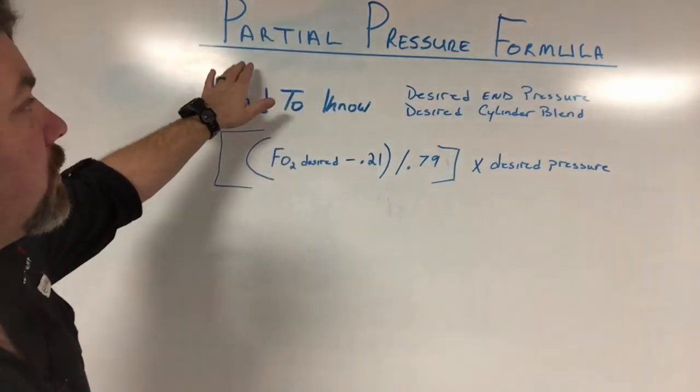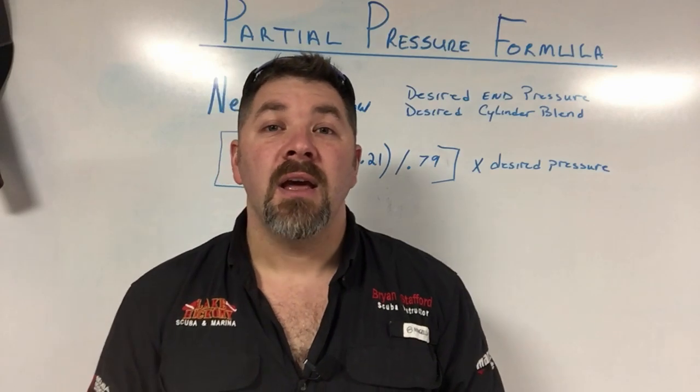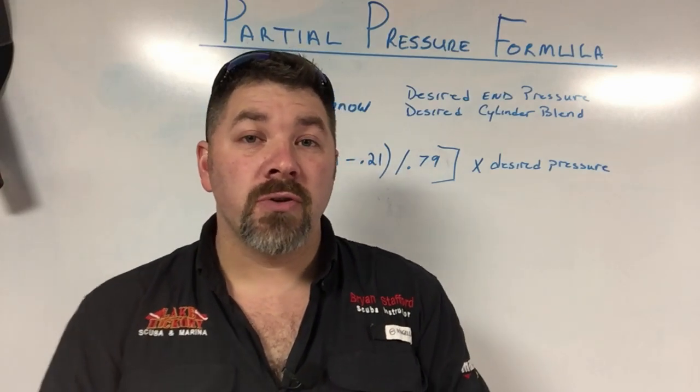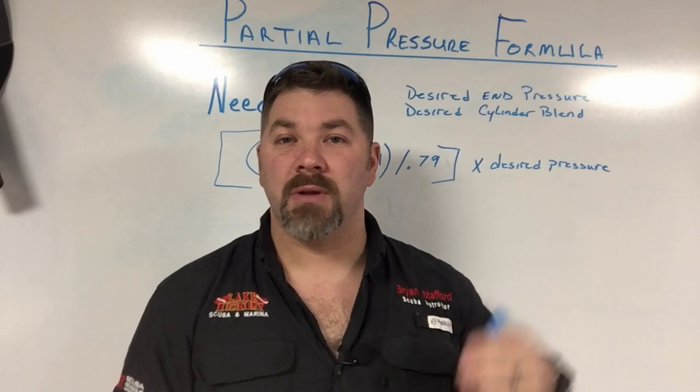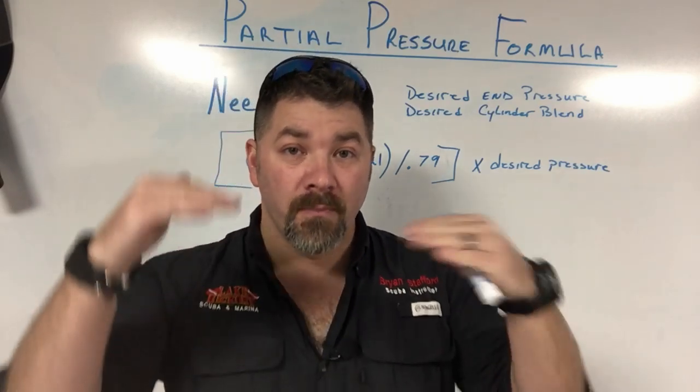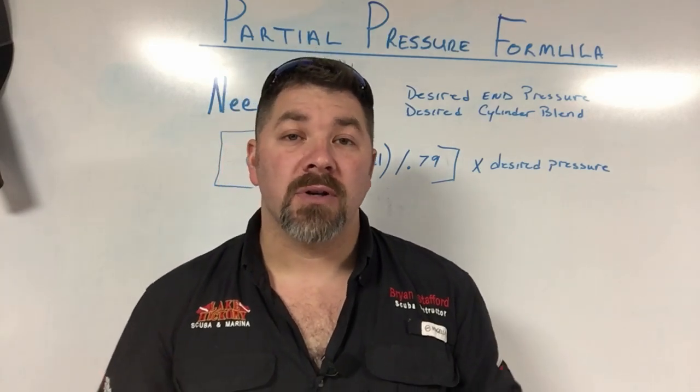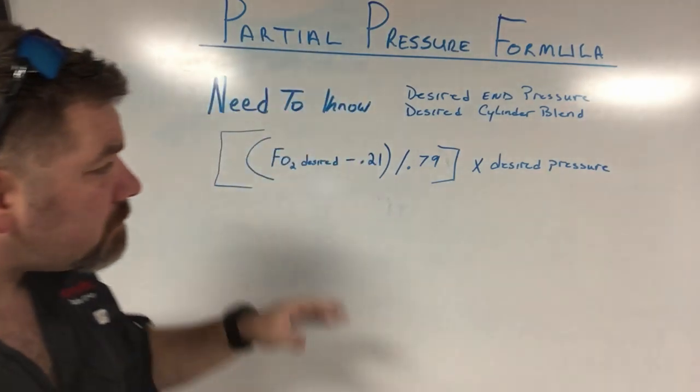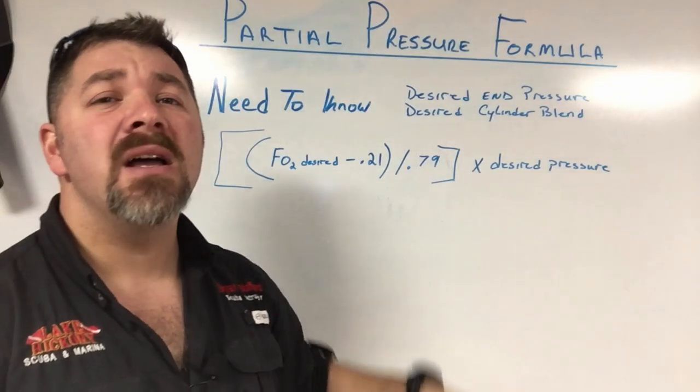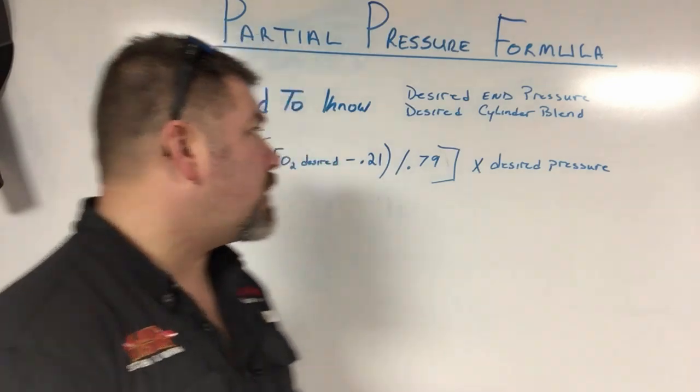And what we're going to be focusing on today is the partial pressure formula. This is the formula that fill operators use to determine if they're partial pressure blending a gas, whether it's nitrox or even tri-mix, how much individual gases we need to put in a cylinder to mix it up. Now we're going to start with the imperial system, so we're going to be dealing with psi, but then I'm going to show you the exact same formula using the metric system using bar as well.